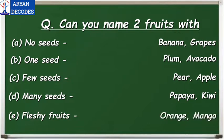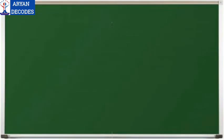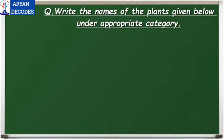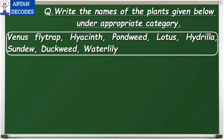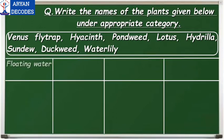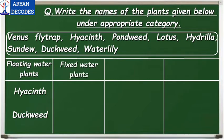Did you know that fleshy fruits are also known as juicy fruits? Now let's move on to the next worksheet. Write the name of the plants given below under the appropriate category using the help box. First, floating water plants — the correct options are hyacinth and duckweed. Second, fixed water plants — the answer is lotus and water lily.